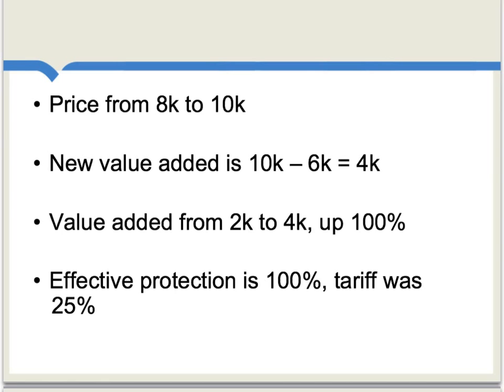Now we can calculate the effective rate of protection. The price of cars is going from $8,000 to $10,000, assuming competitive conditions. We then find that the new value added is $10,000 minus the cost of production, $6,000, which gives us $4,000. So the value added has gone from $2,000 to $4,000, which is up 100%. In this example, the rate of effective protection is 100%, and that is higher than the rate of the tariff, which was 25%.